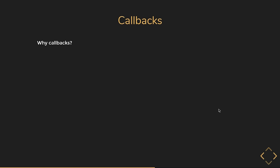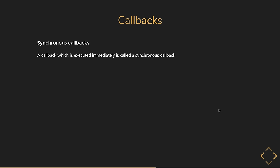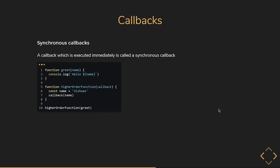We can answer that by categorizing callbacks into two types: synchronous callbacks and asynchronous callbacks. A callback which is executed immediately is called a synchronous callback. The greet callback from earlier is an example, because the function executes immediately when control goes inside the higher-order function. A more practical example is a callback passed to methods like sort, map, or filter — in these cases, the callback defines the logic that the higher-order function needs to apply.